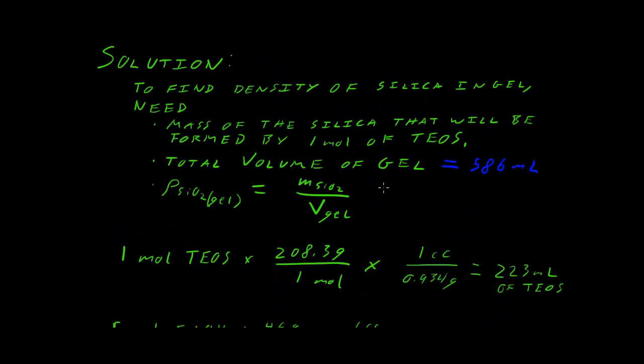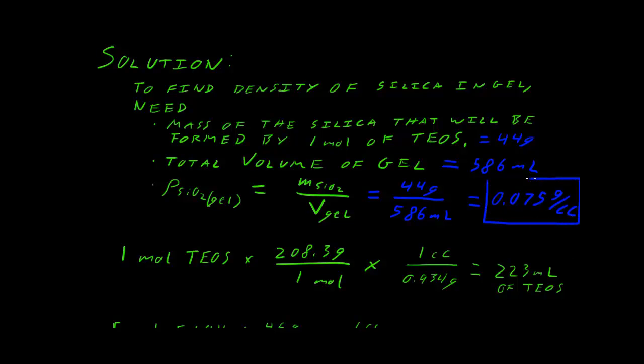Mass of the silica is 44 grams, and then our overall silica density is 44 grams over 586 milliliters, which gives us 0.0075 grams per cc, 7.5 or 75 milligrams per cc. That's really low. That's typical for a silica aerogel, but that's a really low density, and it's especially low for something like a ceramic. Getting a ceramic that's that light is pretty difficult.